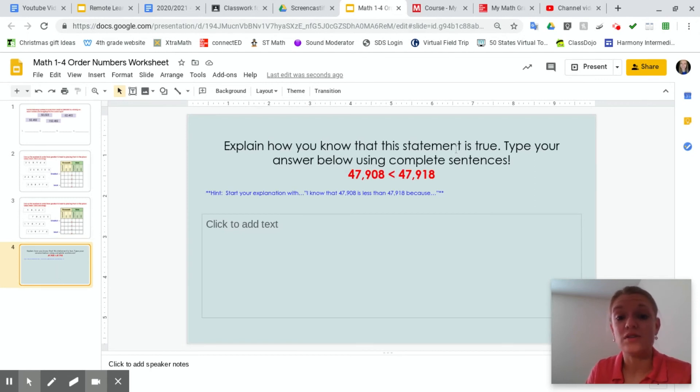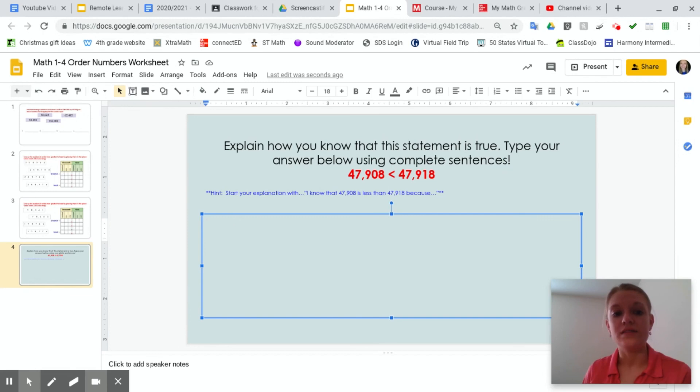says explain how you know that this statement is true. Okay, how do you know that this number, whatever that symbol is, and this number. Okay, how do you know that this is true? Hint. Ooh, I got a hint. Start your explanation with I know that 47,908 is less than 47,919 because and look at this. This is click to add text. So, if I click here, that part goes away. It's just a little hint for me that I can type there and then I'm going to start typing I know that 47,908. See where I'm going with this? Okay, you guys are more than capable of doing this. Quick act and silly with your math worksheets and do your best.